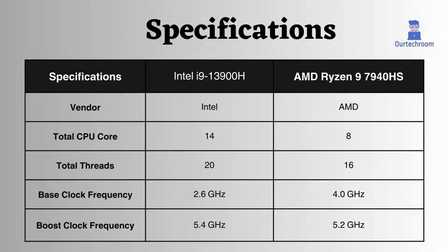The base clock frequency of this Intel is lower than this AMD processor, but it has a higher turbo clock speed. So this Intel Core can boost to higher frequencies when needed, but it does not work as well as this AMD at lower workloads.